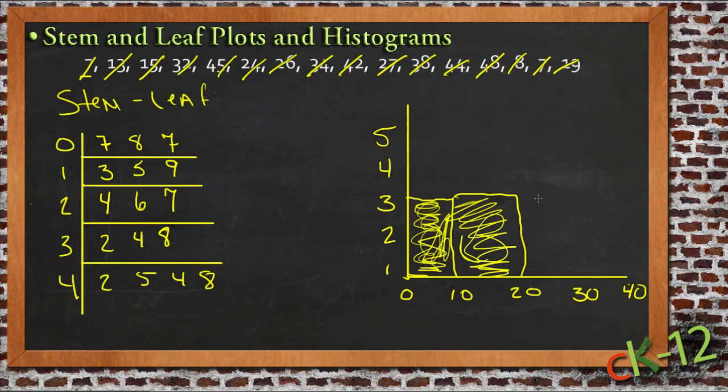And then between 20 and 30, the same thing. And then between 30 and 40, the same thing. And then above 40, we had one more, we had 4 numbers.